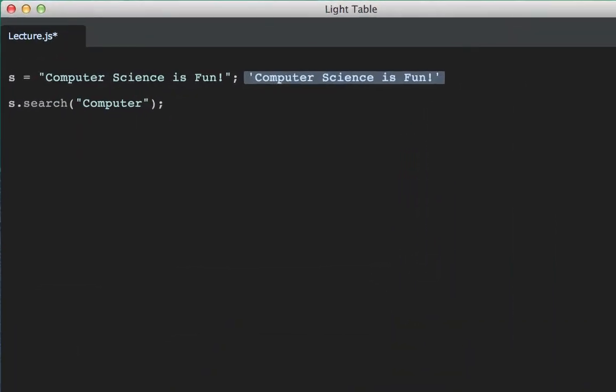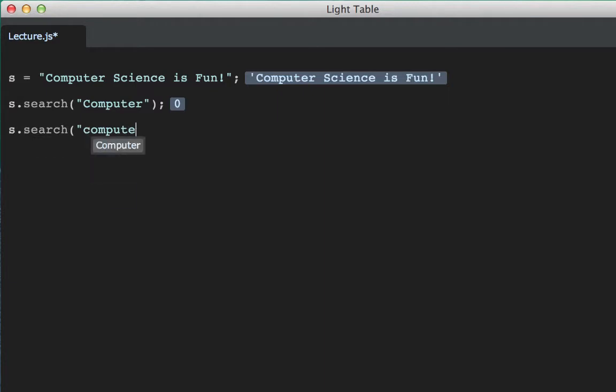To illustrate, here's our same string from before. If we search for the substring computer, it'll give us 0 because there is a substring computer that starts at index 0. It is case sensitive. There is no lowercase c computer in the string, so it returns negative 1. Science starts at index 9, so it returns 9. You can also search for single characters.